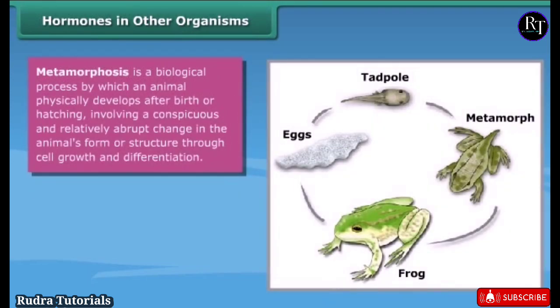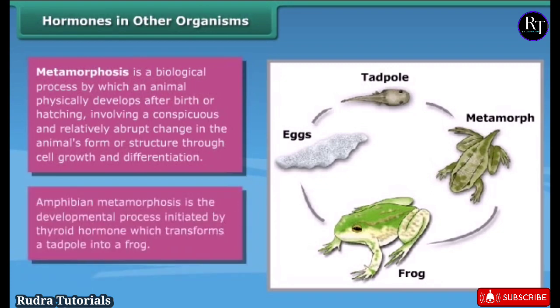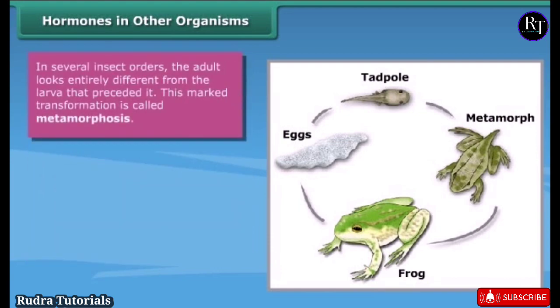Hormones in other organisms: metamorphosis is a biological process by which an animal physically develops after birth or hatching, involving a conspicuous and relatively abrupt change in the animal's form or structure through cell growth and differentiation. Amphibian metamorphosis is the developmental process initiated by thyroid hormone, which transforms a tadpole into a frog. In several insects, the adult looks entirely different from the larva — this marked transformation is called metamorphosis.